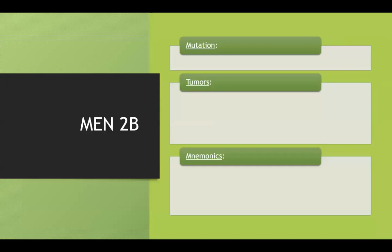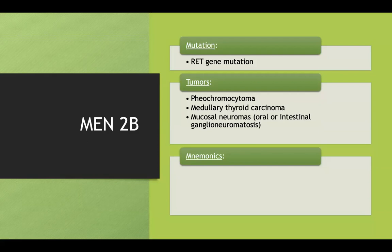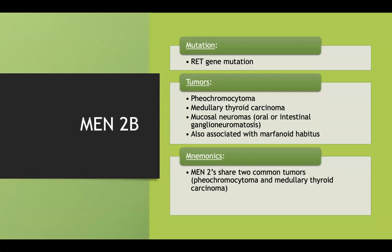MEN2B is also a RET gene mutation, just like MEN2A. You'll have pheochromocytoma again and medullary thyroid cancer again, but this time you'll have mucosal neuromas instead of parathyroid hyperplasia. And MEN2B has only one P — the pheochromocytoma — consistent with the 3-2-1 rule.